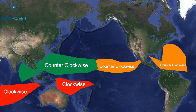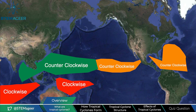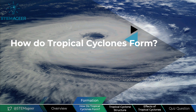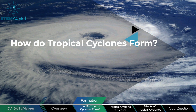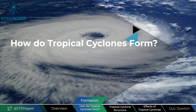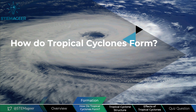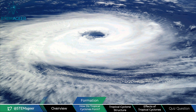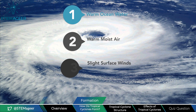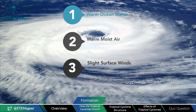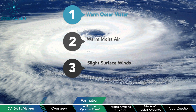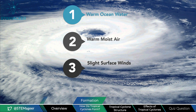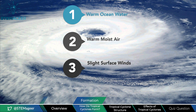Now let's talk about how tropical cyclones are formed. There is a recipe of key ingredients that, when combined together the right way, can cause a hurricane, typhoon, or cyclone to form. According to NOAA, the key ingredients for a tropical cyclone are warm ocean water at the surface at or above 80 degrees, warm moist air, and slight surface winds.